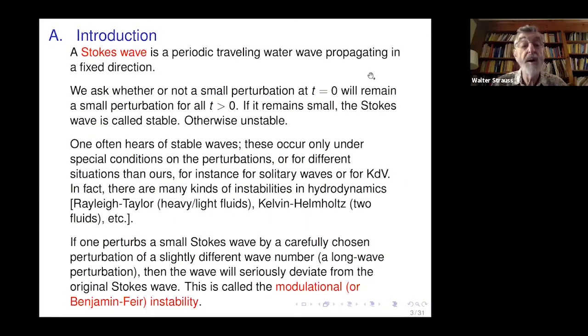A Stokes wave is a water wave traveling in a fixed direction, periodic in the horizontal variable. When one perturbs a Stokes wave by a slightly different wave number, so you've got a time dependent problem, the wave will seriously deviate from the original Stokes wave. This is the modulational instability, often called the Benjamin-Fear instability.